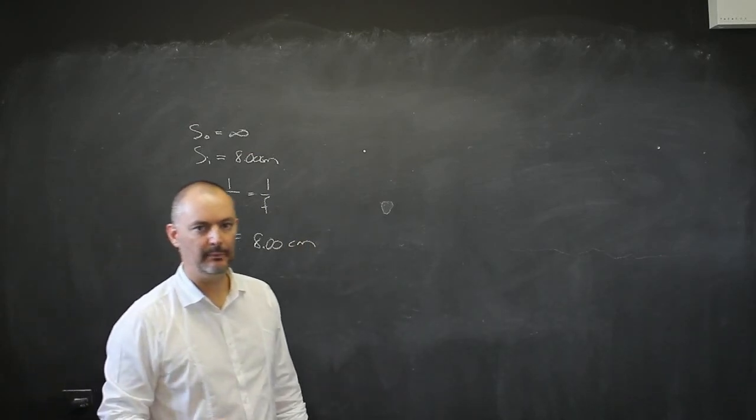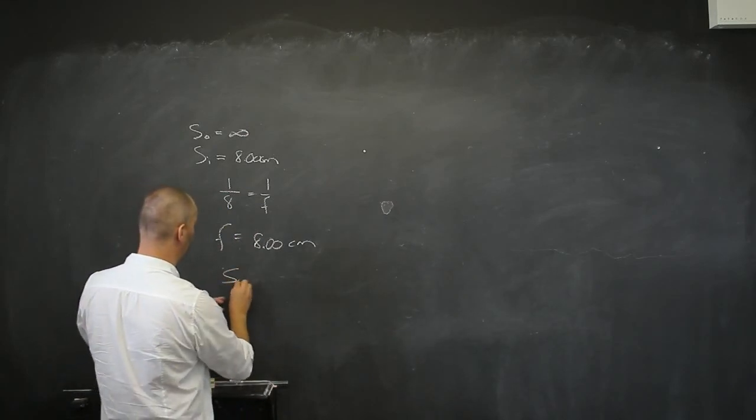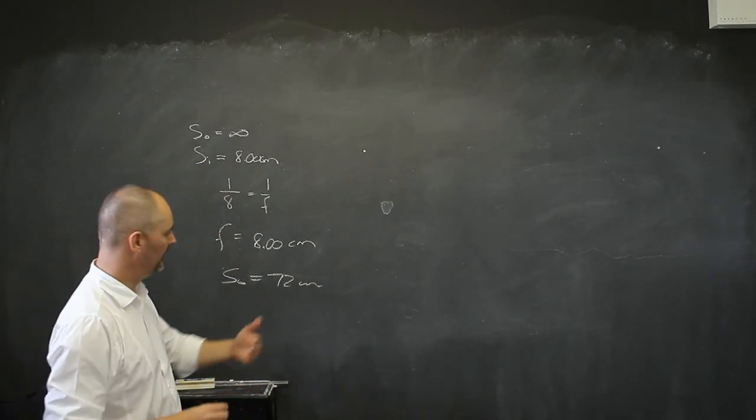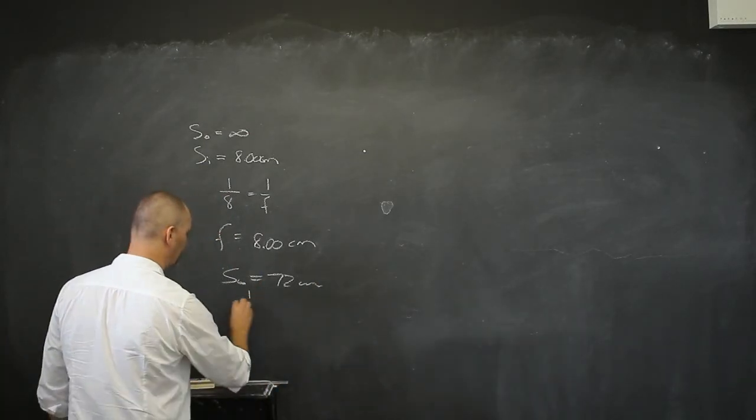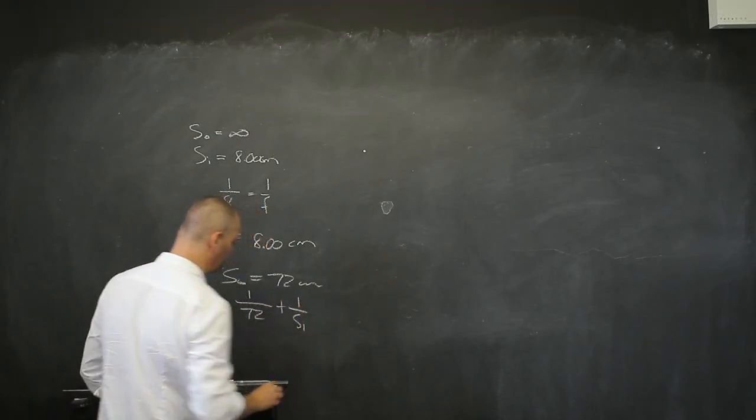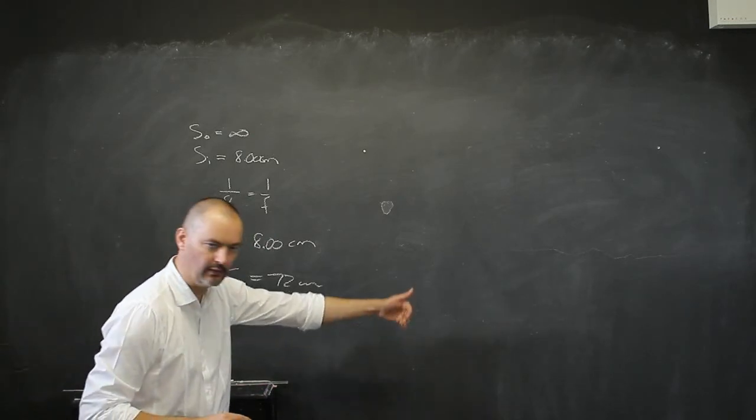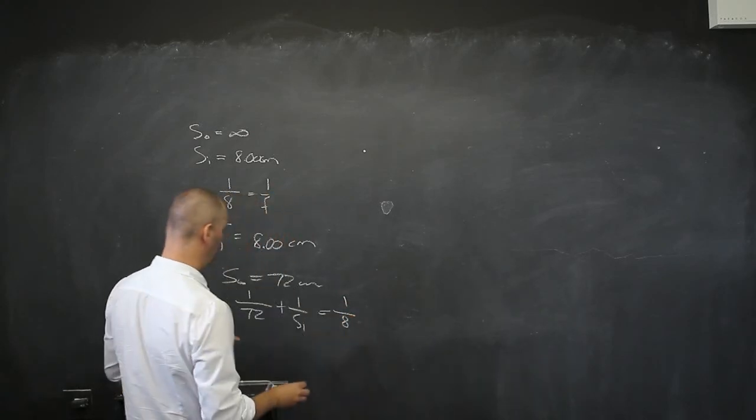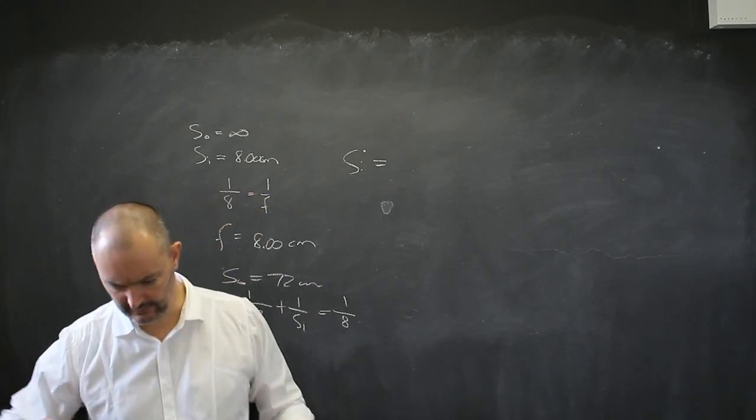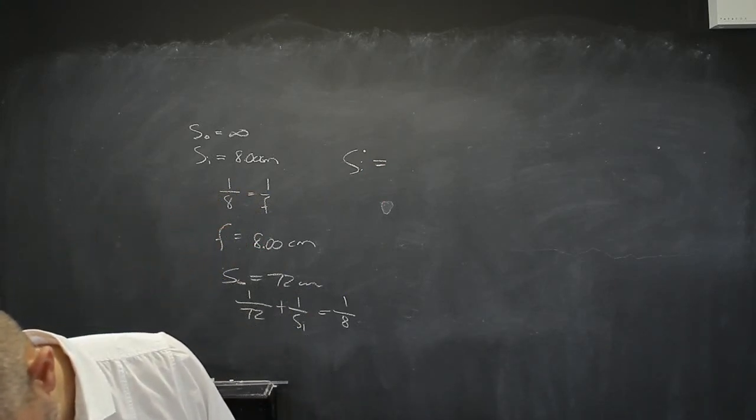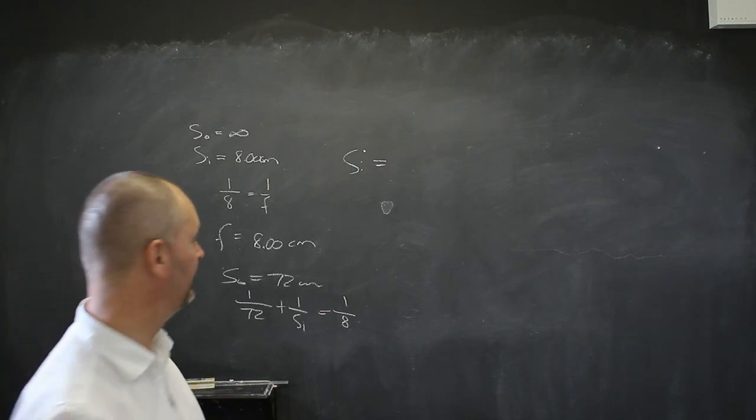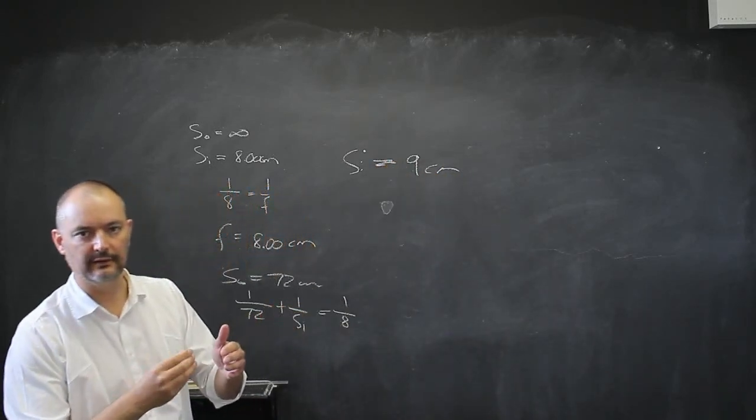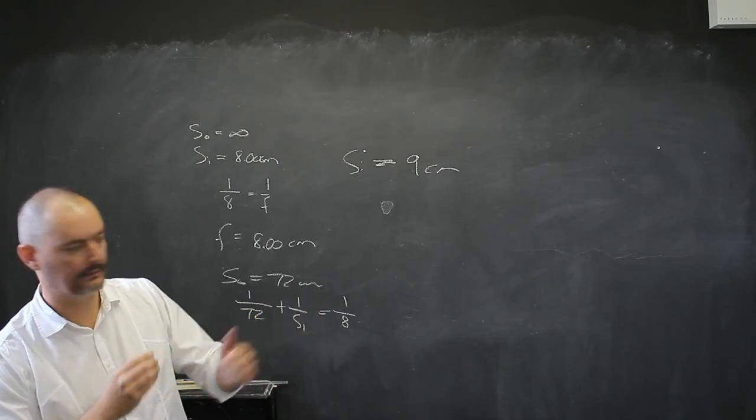Now I ask if I now put an image 72 centimeters in front of the lens. So my S0 is now going to be 72 centimeters. What adjustment must I make as far as my lens and my photographic plate is concerned? Well that's going to be very easy, 1 over 72 plus 1 over SI, and that SI is going to be a real inverted image on the film itself. It's going to be 1 over the focal distance, which I've just worked out to be 1 over 8. And that will give me an SI of about 9 centimeters. So I need to increase the distance between the film and the lens by 1 centimeter.